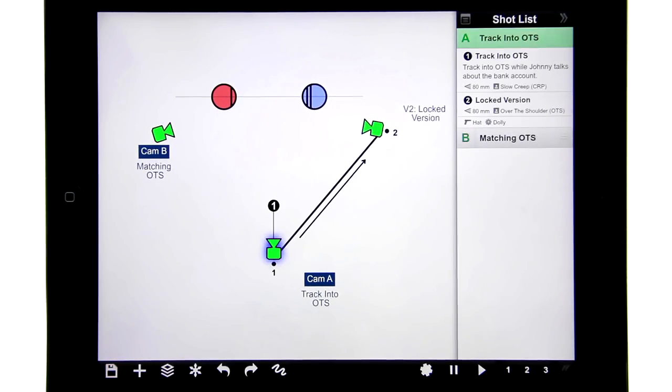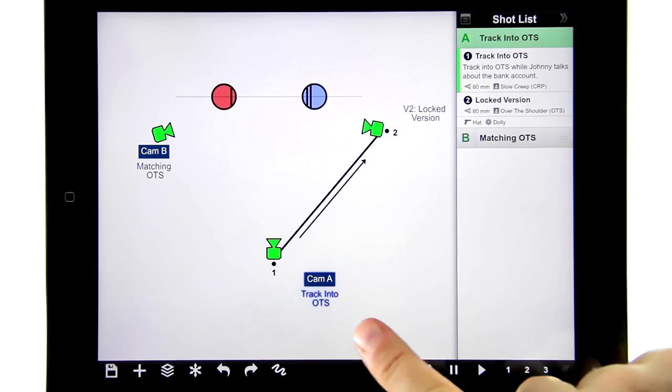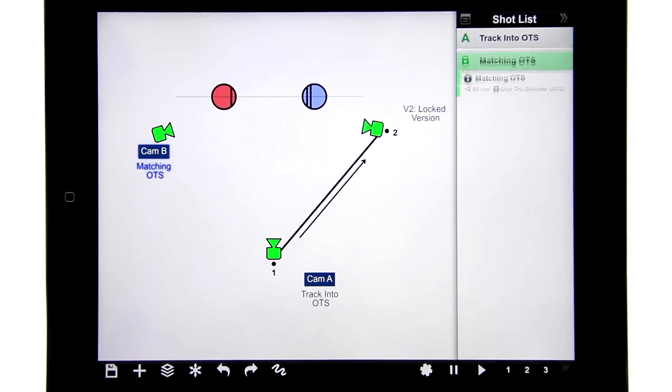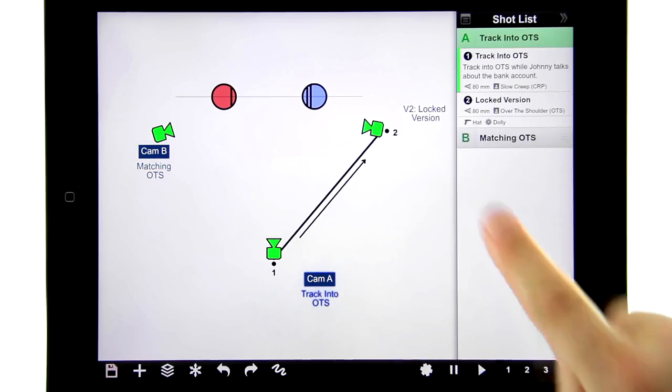If I tap a shot I can see all the versions that are in it. If I tap a version it's highlighted over in the diagram—see, here it's showing me where it is. And that works the other way too, because the shot list is always focused on the shot I'm working on.